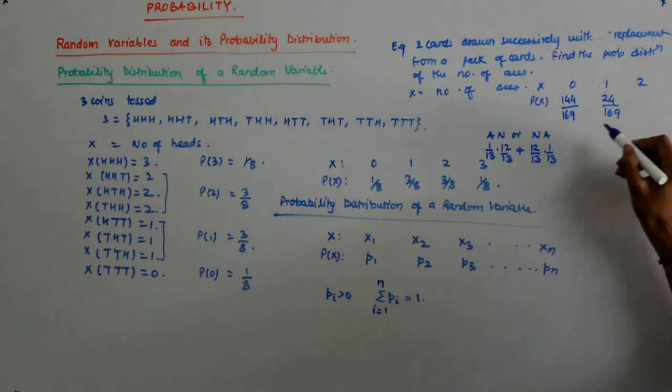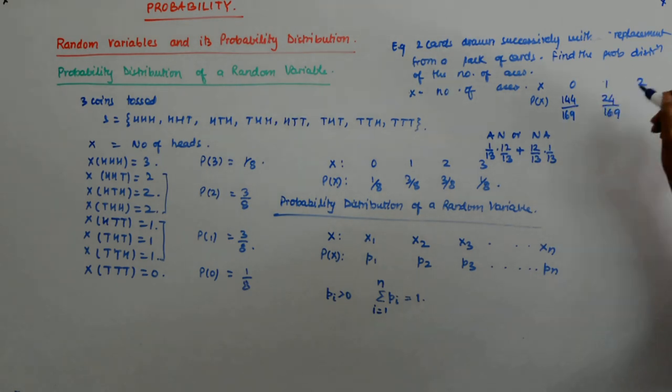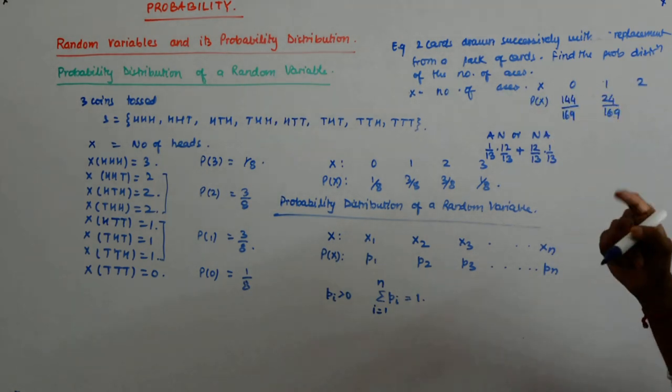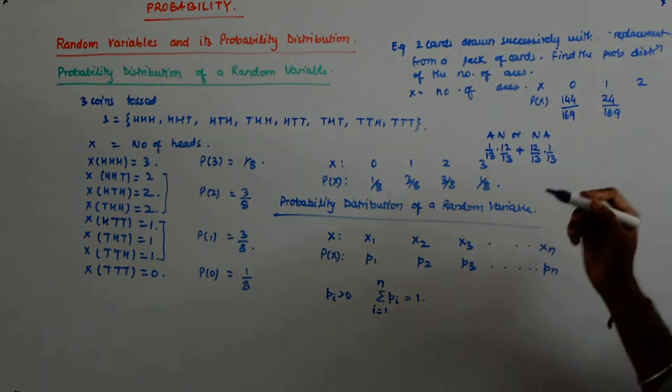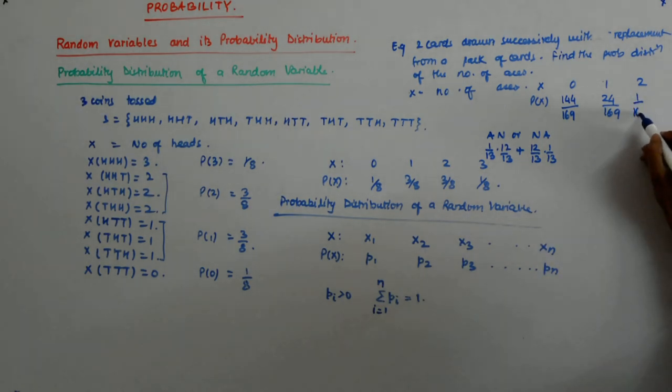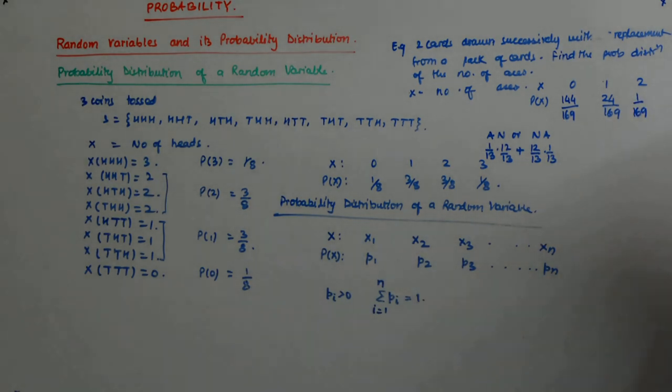And what is drawing out two aces? 1 by 13 into 1 by 13. So, that is 1 by 169. Do they sum to 1? They do. Always do check that. Otherwise, it will be wrong because we say summation pi is 1.